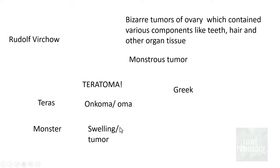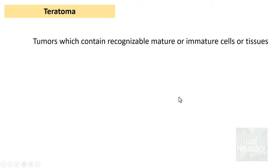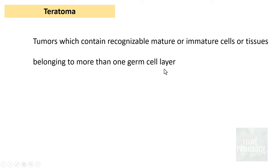So teratoma basically means 'monstrous tumour' in Greek terminology. These are tumours which contain recognizable mature or immature cells or tissues belonging to more than one germ cell layer. The germ cell layers are ectoderm, endoderm, and mesoderm. Sometimes all three germ cell layers can be seen.